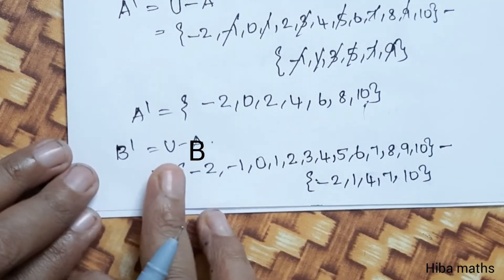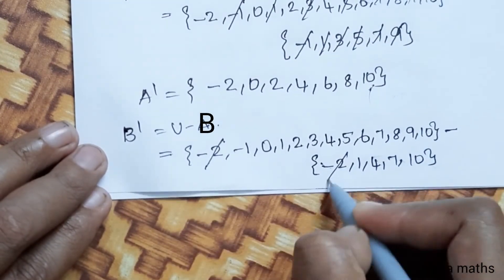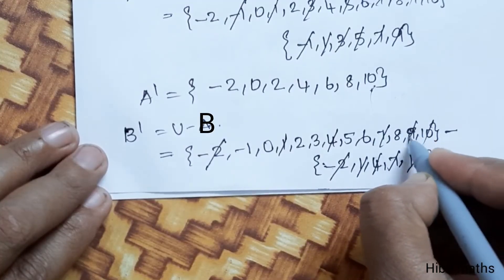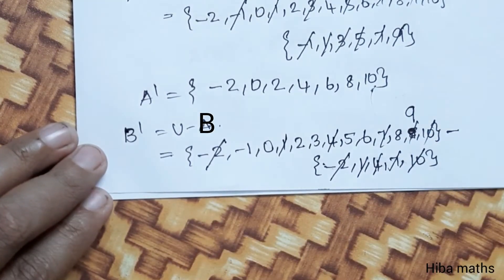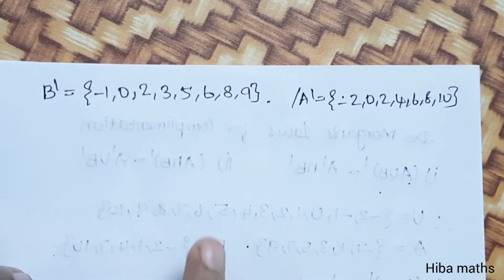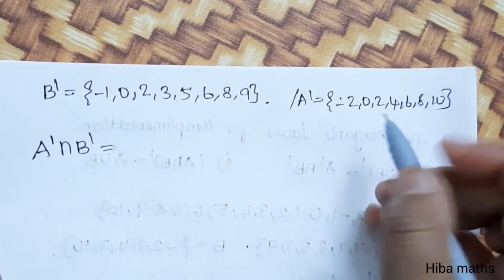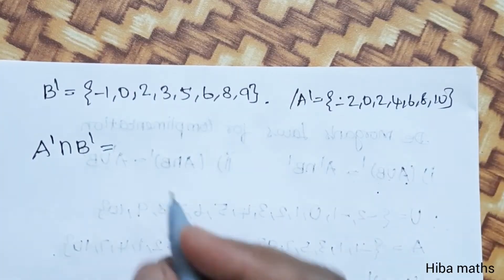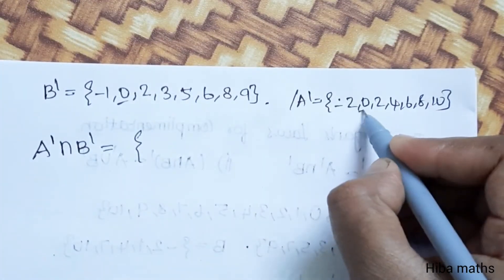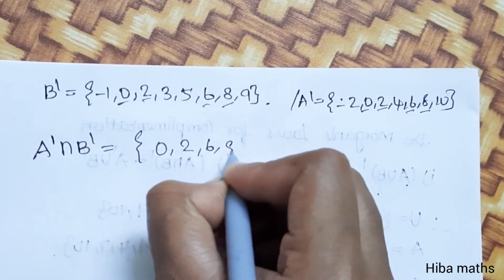Now we find B dash = U minus B. U set and B set: B = {-2, 1, 4, 7, 10} — cancel these from U. Remaining elements give B dash = {-1, 0, 2, 3, 5, 6, 8, 9}. Now A dash intersection B dash: the common elements of A dash and B dash are {0, 2, 6, 8}.